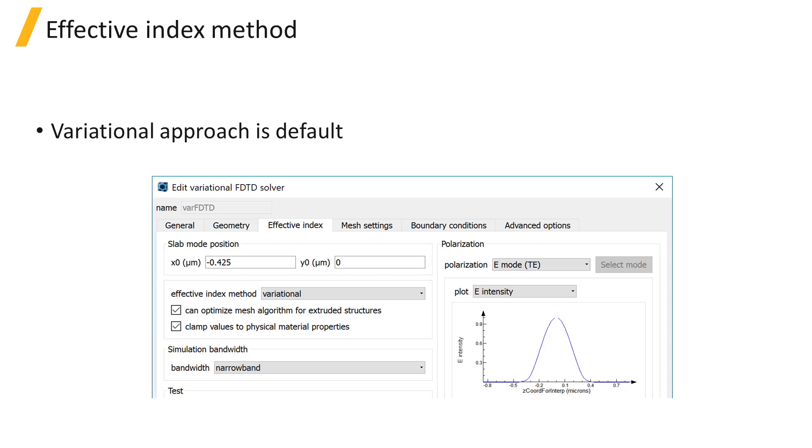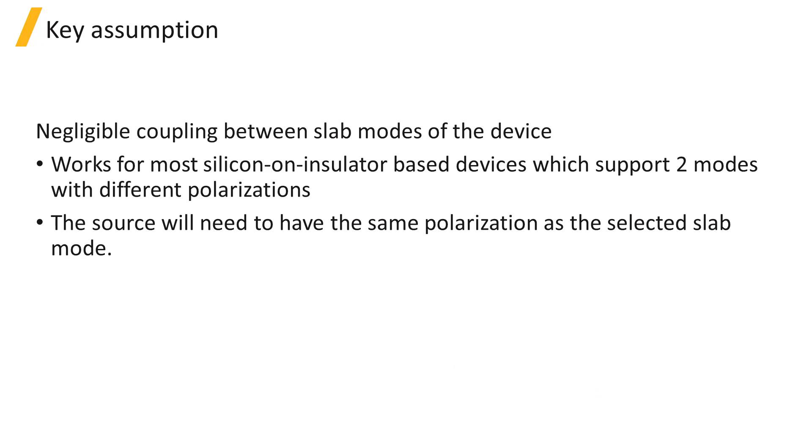You can verify the results by comparing with 3D FDTD or EME simulations like we did in the My First Simulation section. Both methods use the key assumption that there is negligible coupling between slab modes of the device. This is a good assumption for most silicon-on-insulator-based devices, which support two modes with different polarizations.